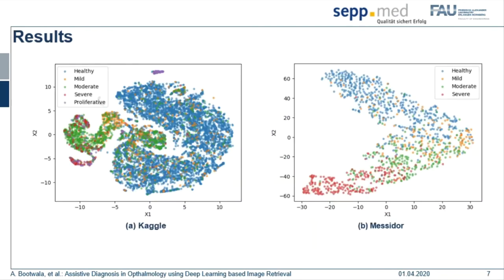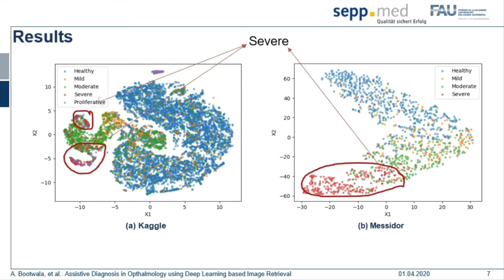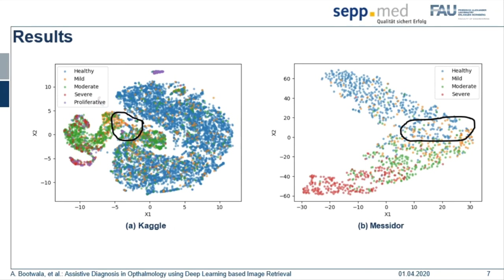The T-SNE plot shows the latent representation of images learned by the network on a 2D manifold. You can see clear clusters of healthy, mild, moderate, and severe diabetic retinopathic images. The presence of neighboring clusters also indicates the progressive nature of the disease, and the difficulty of the problem is emphasized by the fact that some images lie at the borderline, making it difficult to assign them to one class or the other.